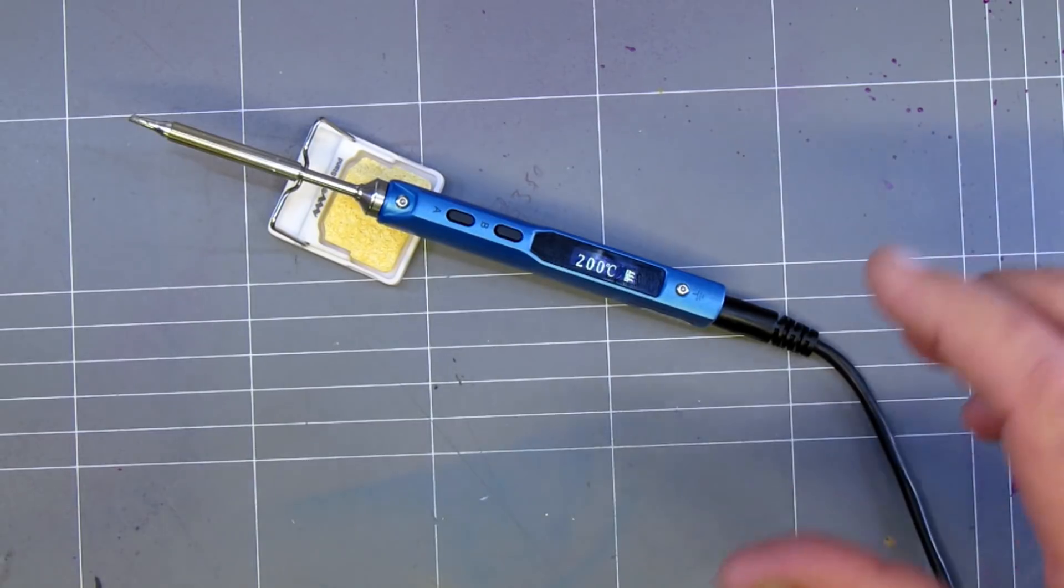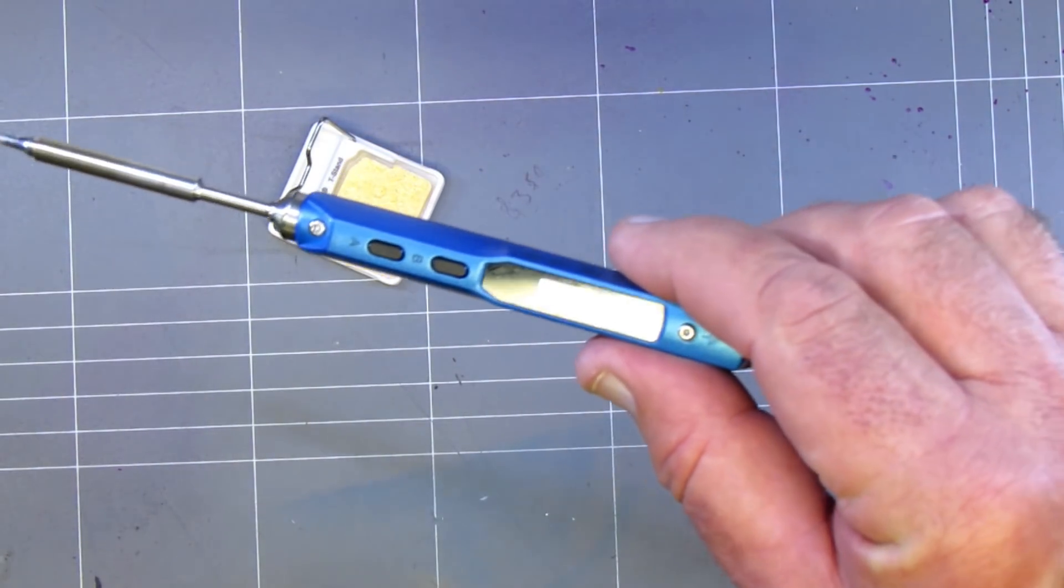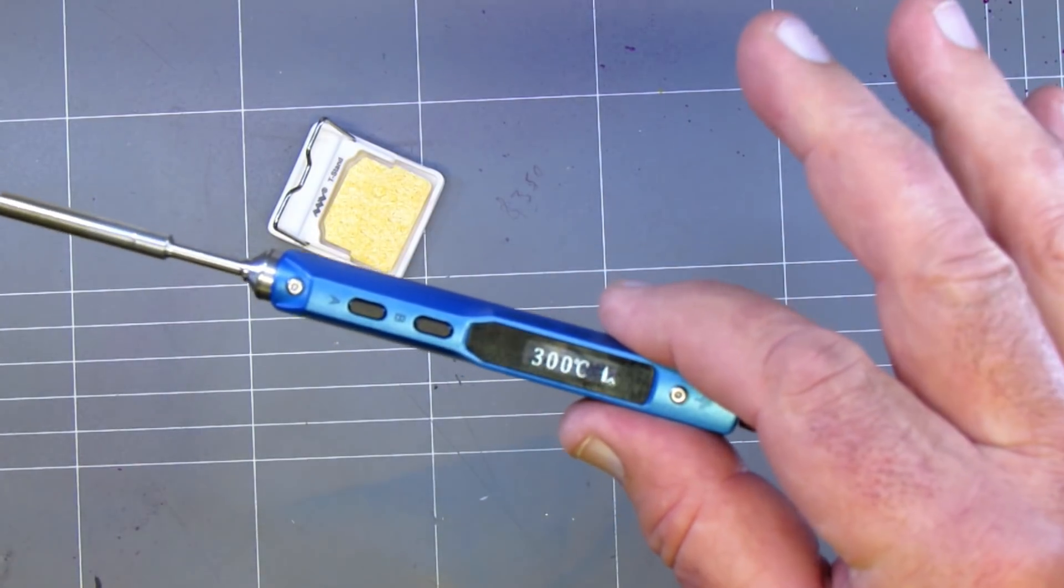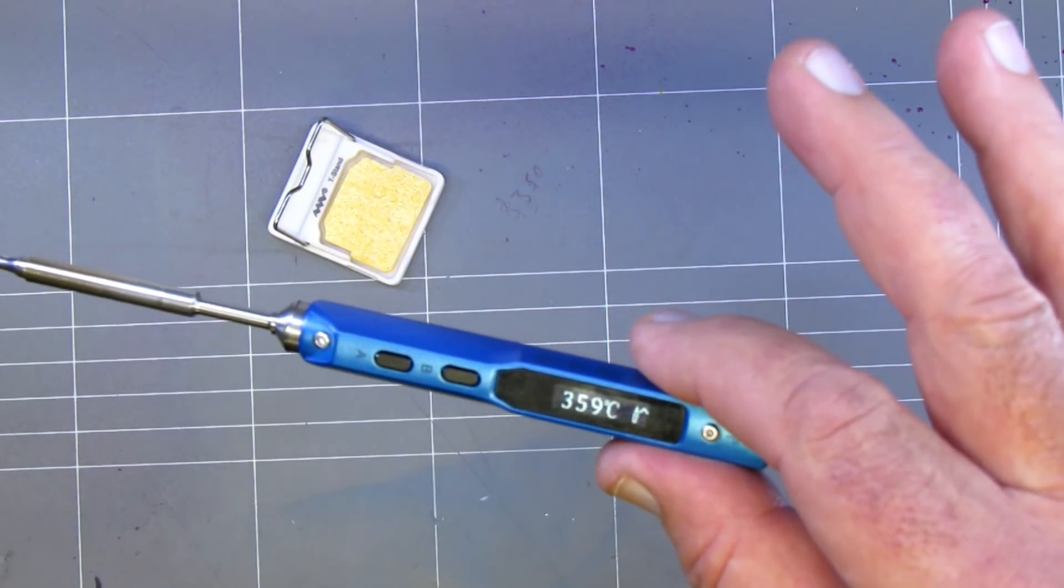Now if I pick this iron up, it'll go back into work mode. It's now sensed that I've picked it up. As you can see I haven't done anything, just picked it up. It's smart enough to know and it'll go back to 400, back to working temperature.